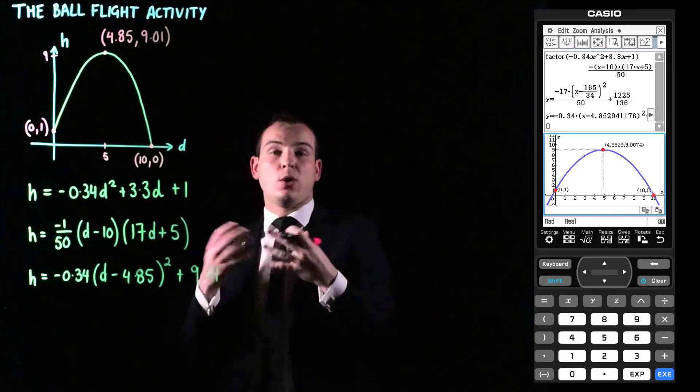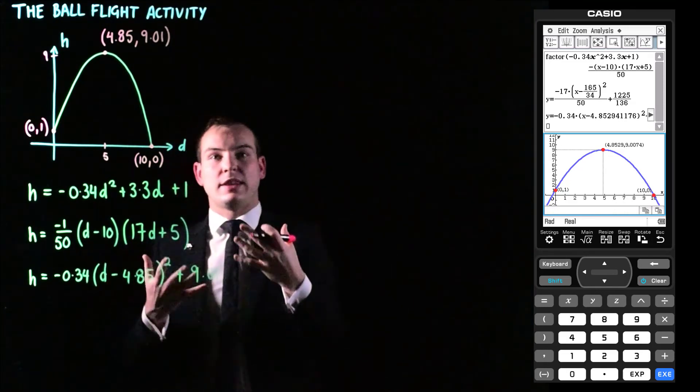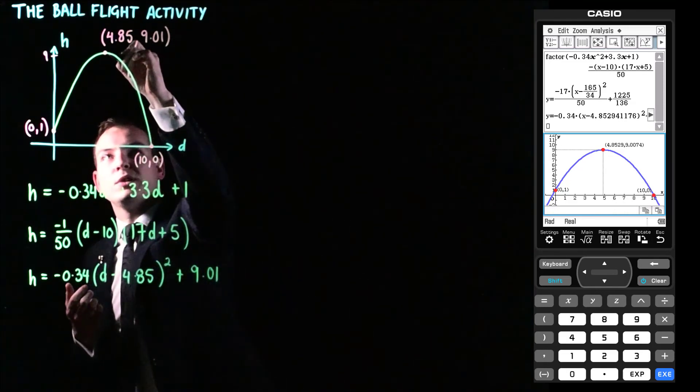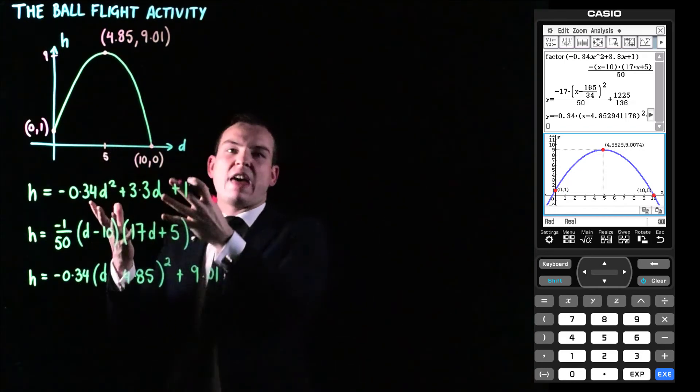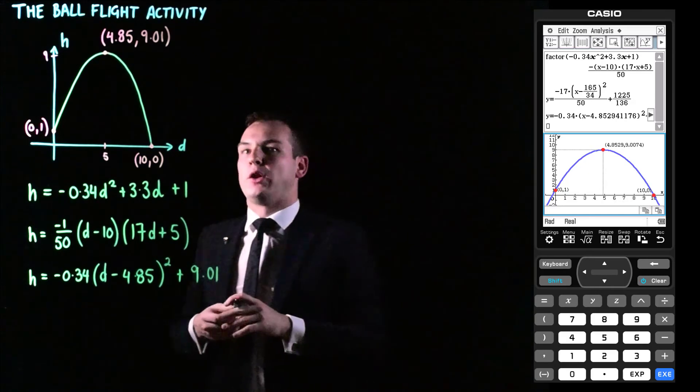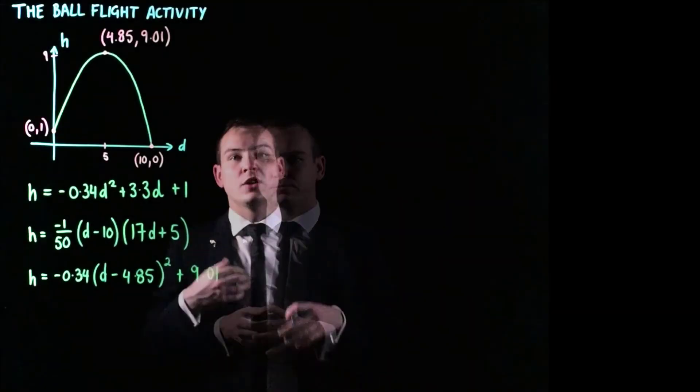So what I'm going to do is I'm just going to change that turning point to match what the equation is and what it's given us. So this coordinate I'm just going to change to be 4.85, correct to two decimal places, comma 9.01. So even though we use the coordinate 5 comma 9, and that of course would still be on the graph, just a little bit over here.